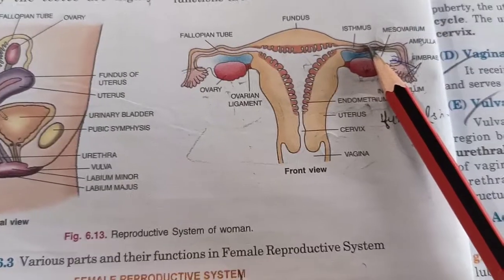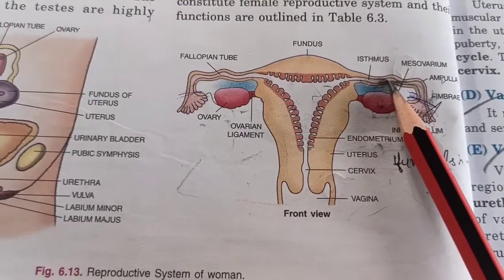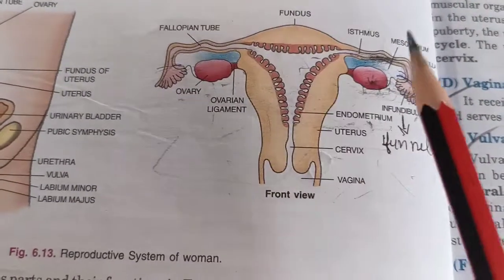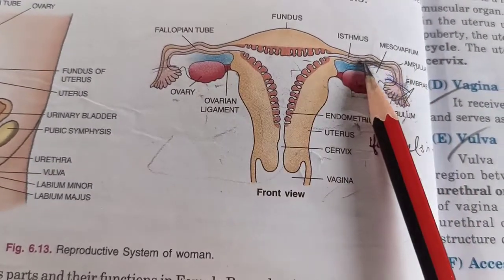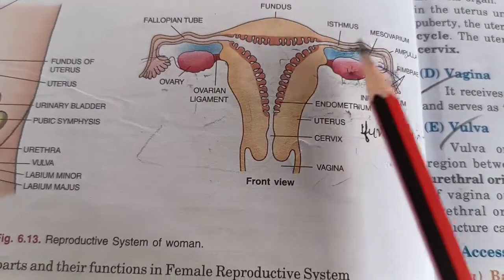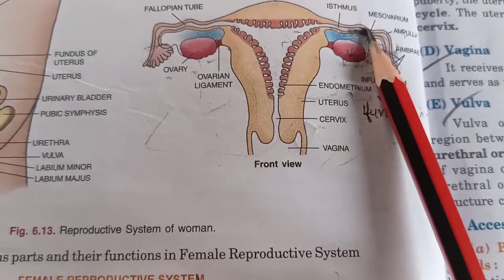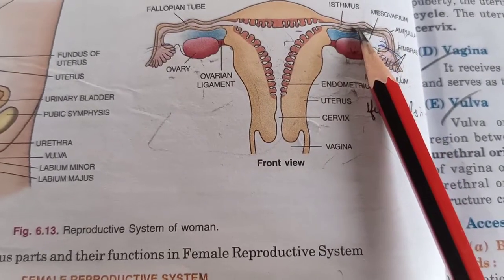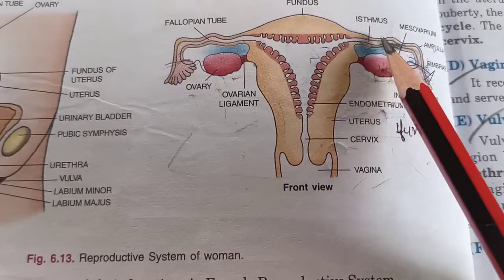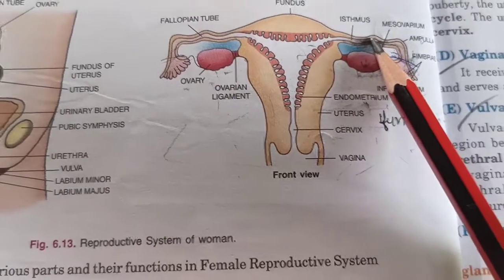Here is a big exam question: at which place in the female reproductive system does fertilization occur? The answer is — fertilization occurs inside the fallopian tube of the female reproductive system. This question is frequently asked for one mark, so remember: fertilization happens in the fallopian tube.